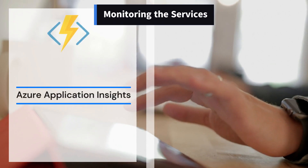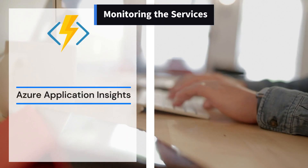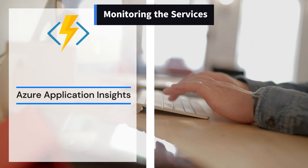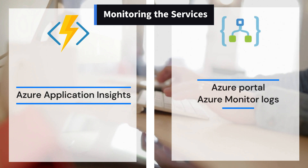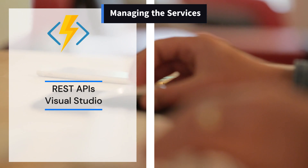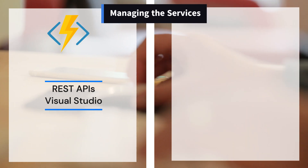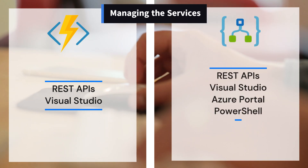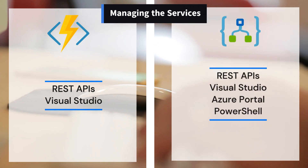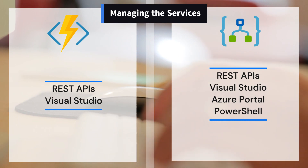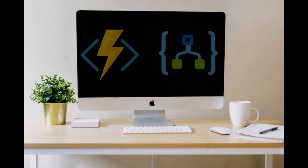For monitoring, Azure Functions uses Azure Application Insights, while Logic Apps uses the Azure portal and Azure Monitor logs. When it comes to management, both services offer REST APIs and Visual Studio; however, Logic Apps also offers the Azure portal and PowerShell. Both Azure Functions and Azure Logic Apps are powerful tools that allow you to create complex architectures for your serverless workloads.